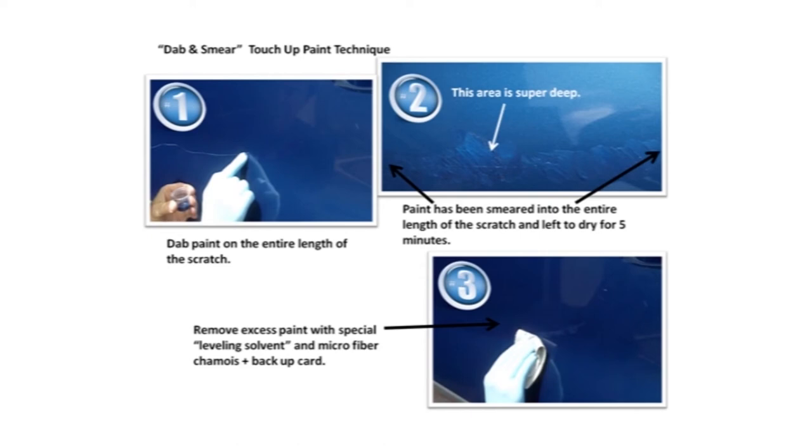Here in step number three, we're going to remove all the excess. So all this left is the paint that's in the scratch itself. And this is, without a doubt, the best way to visually camouflage any kind of a deep scratch or chip.